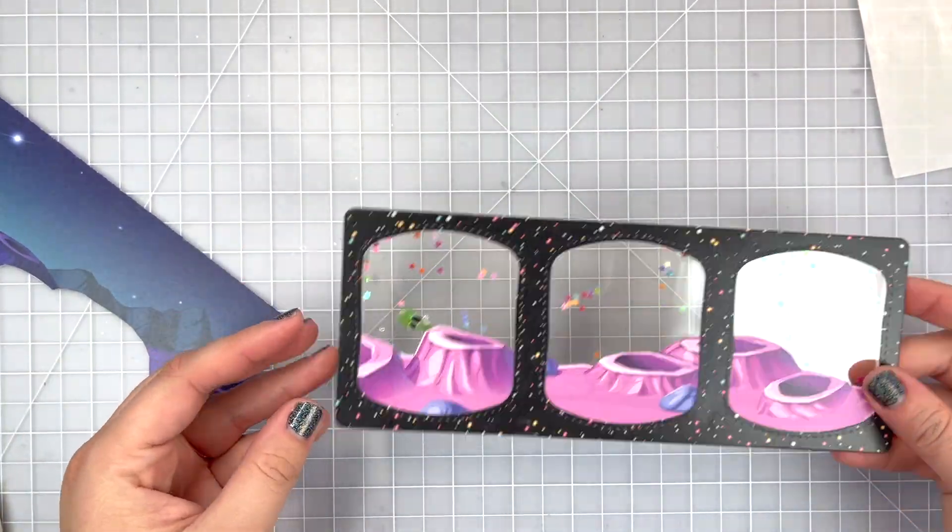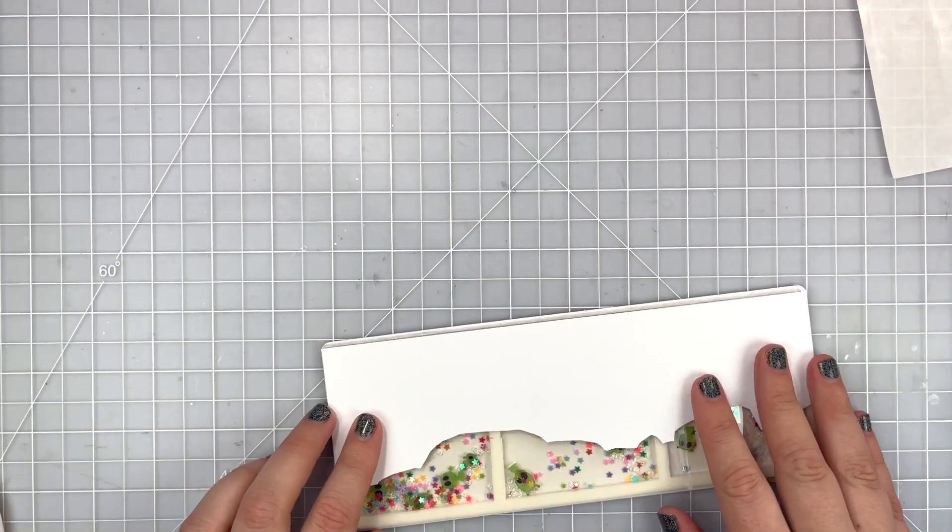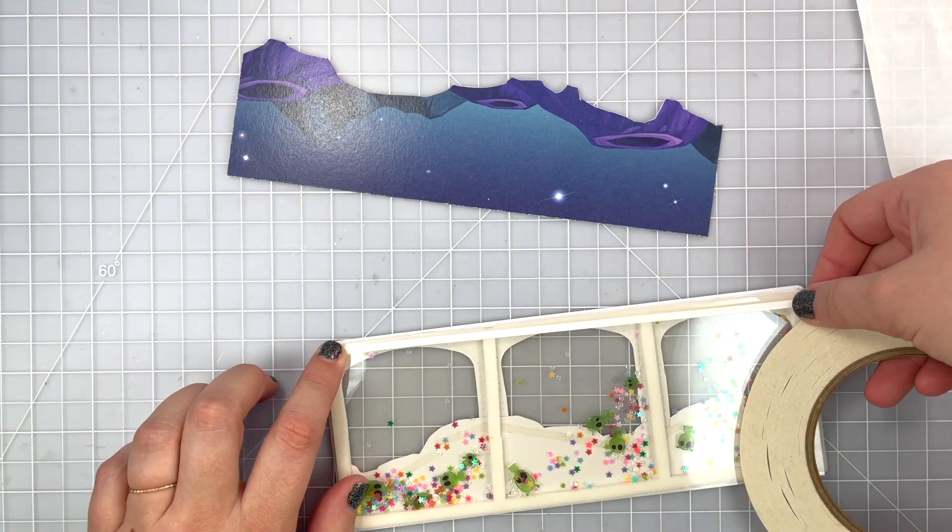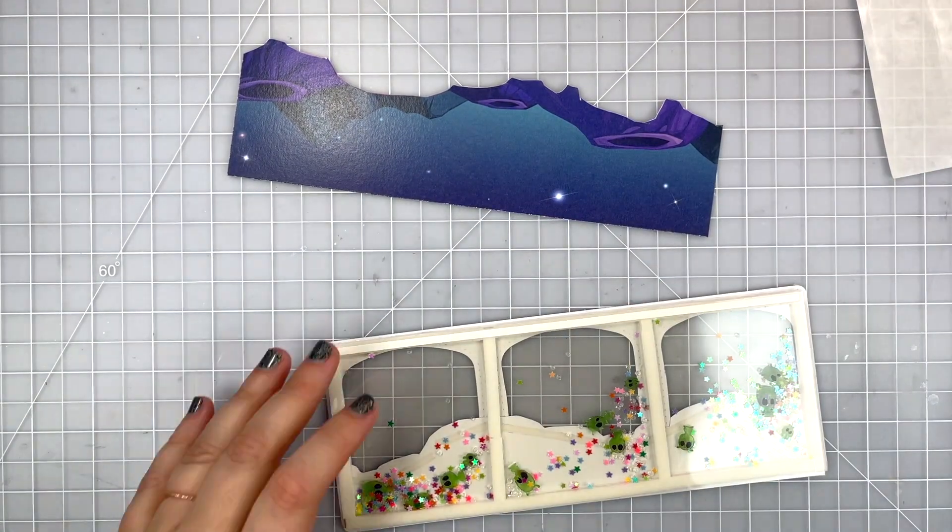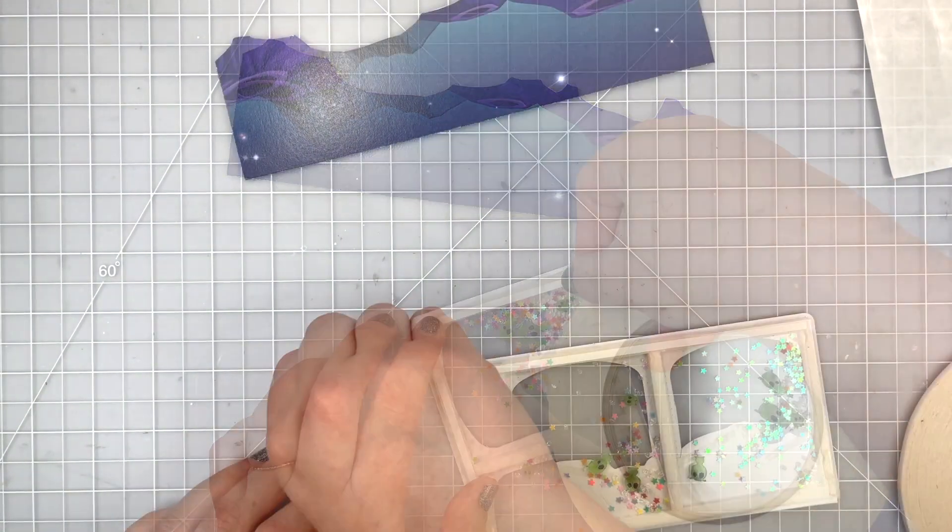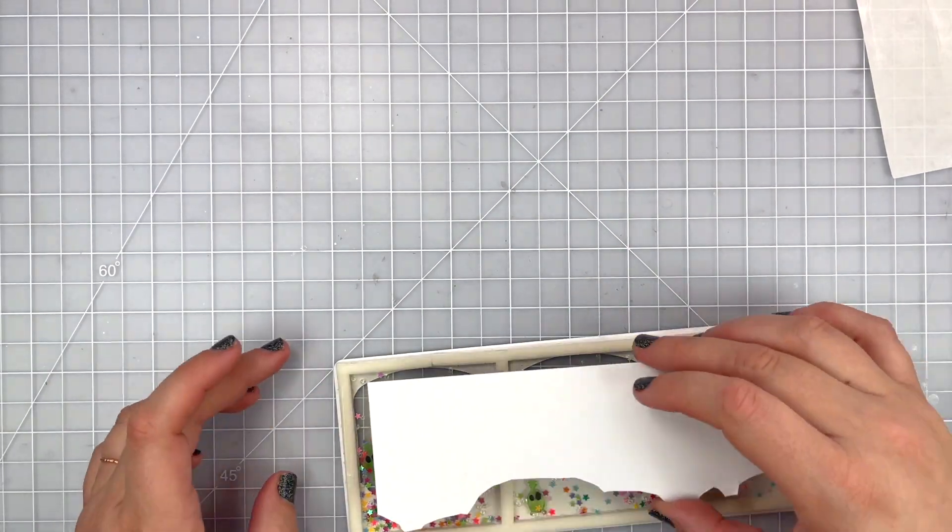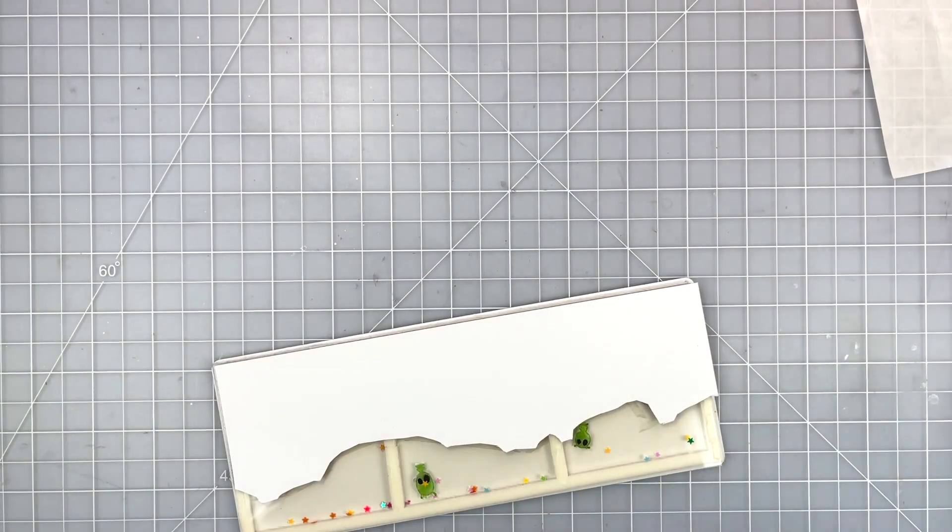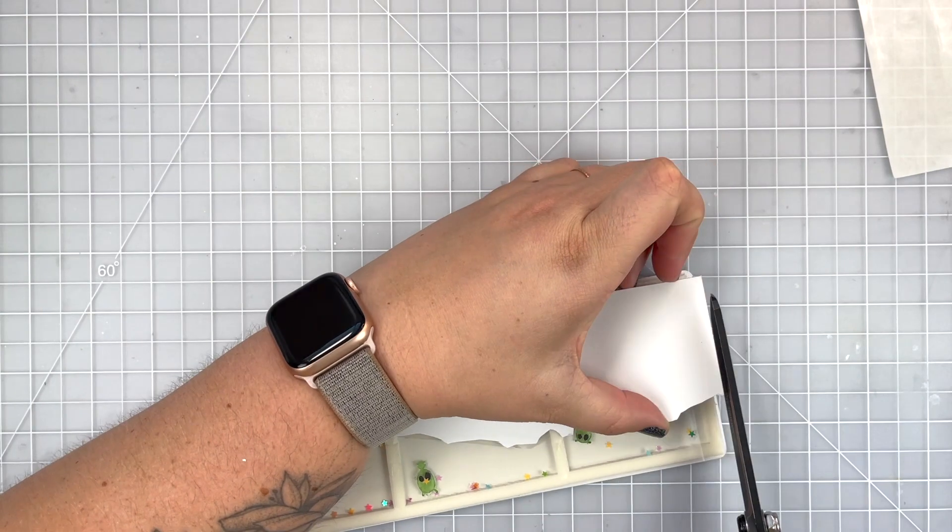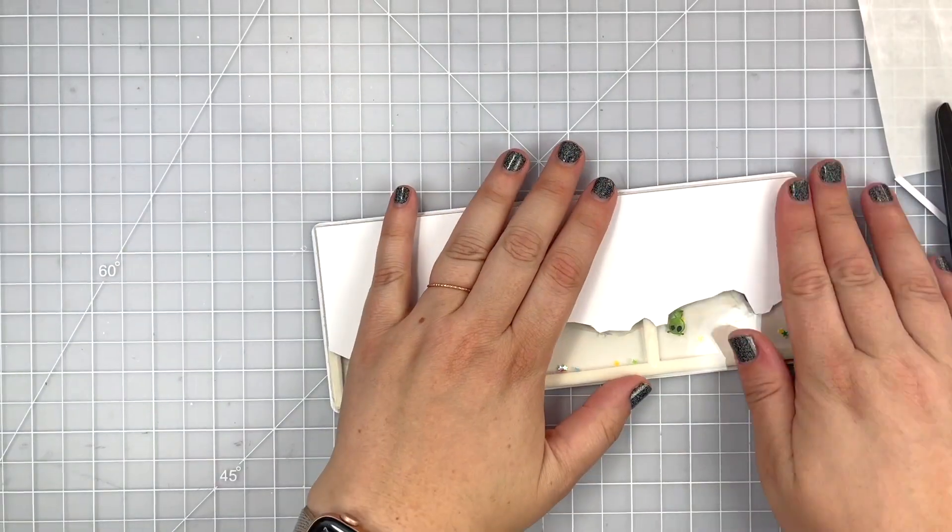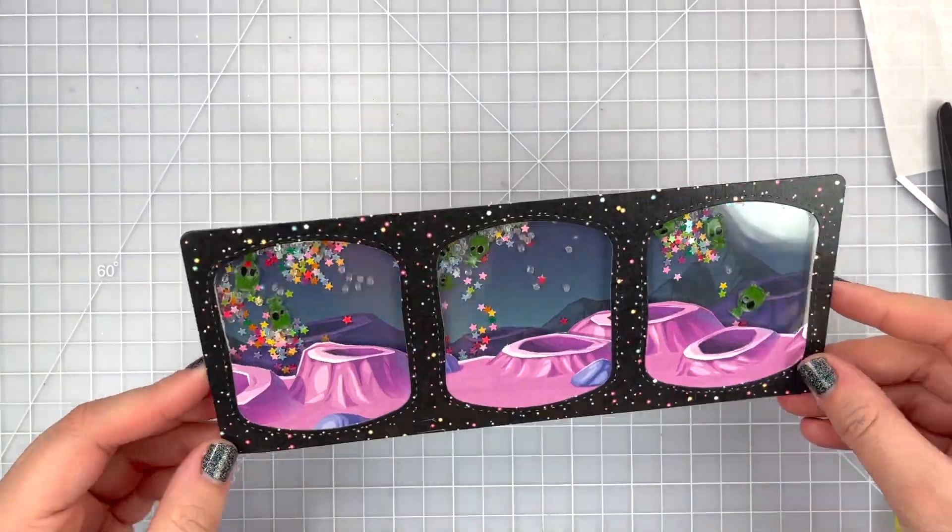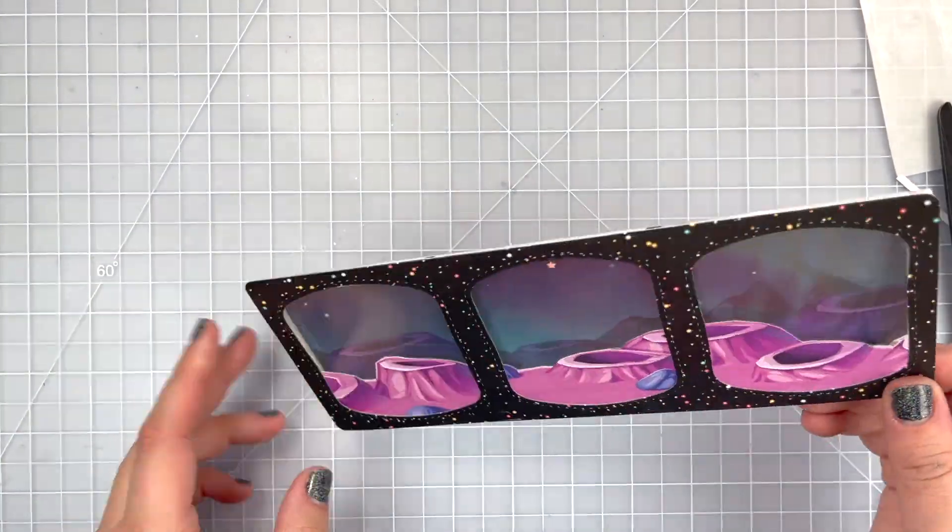Now everything is looking pretty good. I'm going to work on the back side of my shaker - what will be adhered to my card base. I'm using that double-sided tape again and outlining the back and placing that onto my blue sky piece. It's a little long - I misjudged where to cut it, so I'm just going to trim off a little bit more and adhere that down.